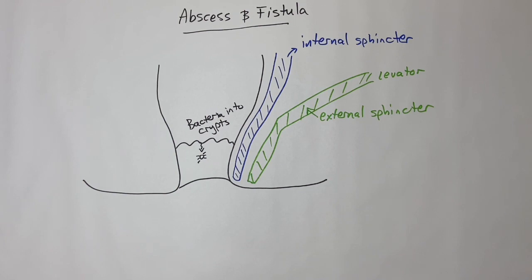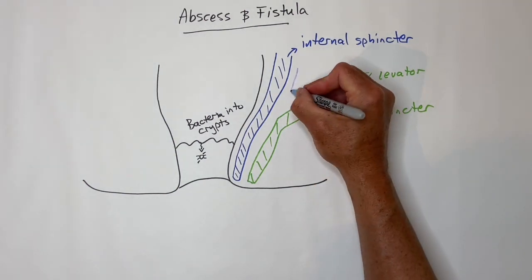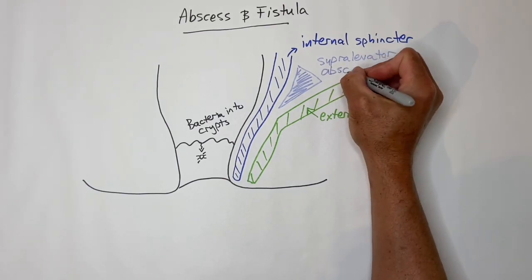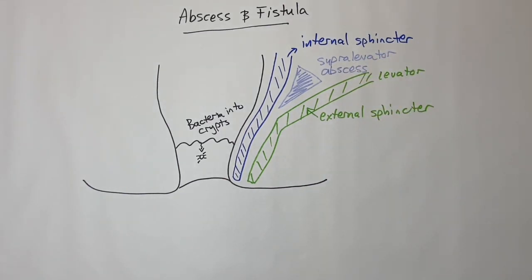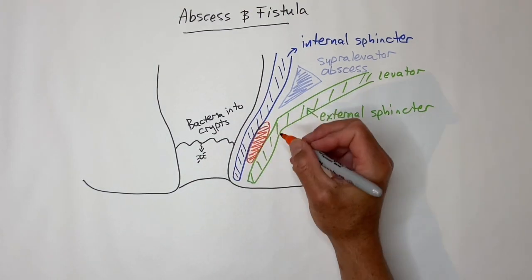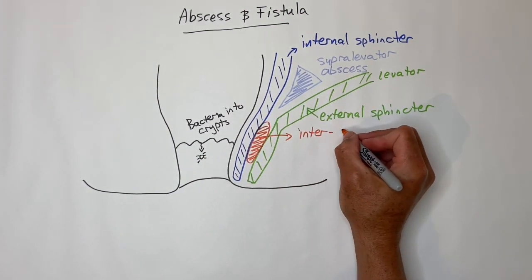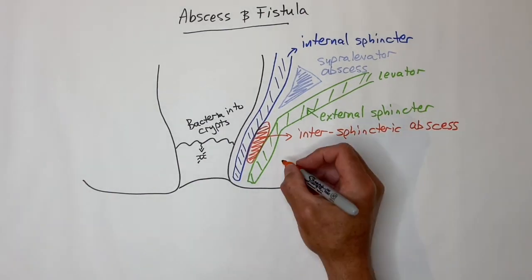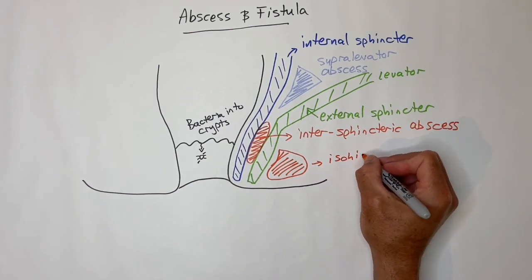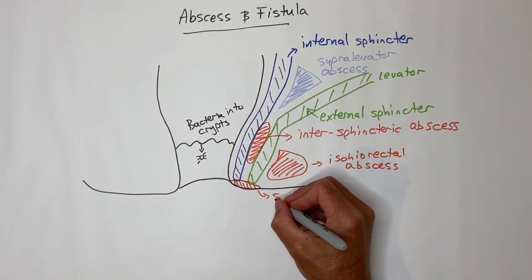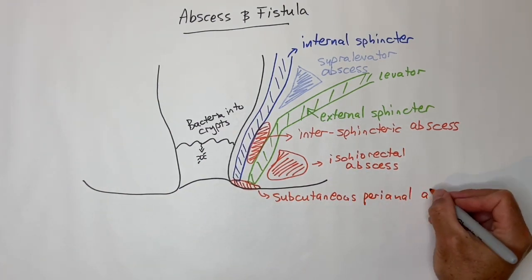Know the types of abscesses in relationship to the sphincter muscles and the levator muscles. If an abscess is above the levators, then it is a supralevator abscess. If it is between the internal and external anal sphincters, then it is an intersphincteric abscess. If it is outside of the external anal sphincter, then it is an ischiorectal abscess. And if it is just under the skin or mucosa, then it is a simple subcutaneous perianal abscess.